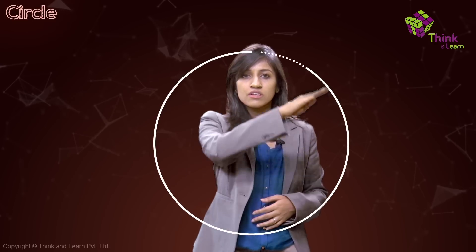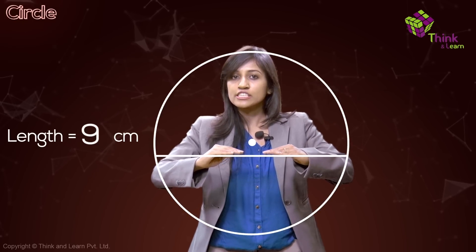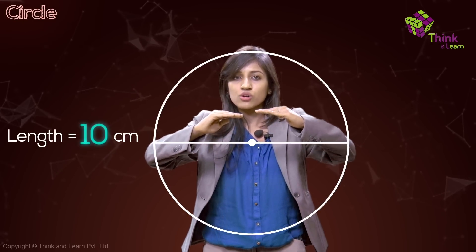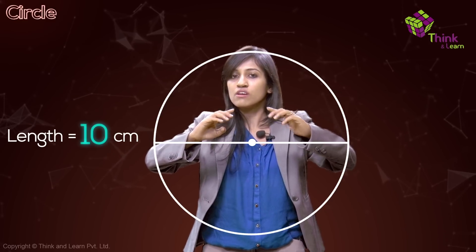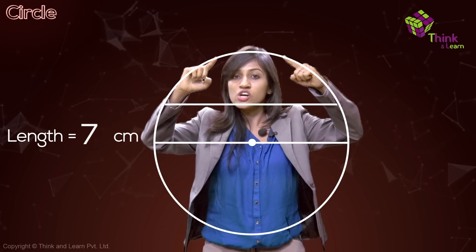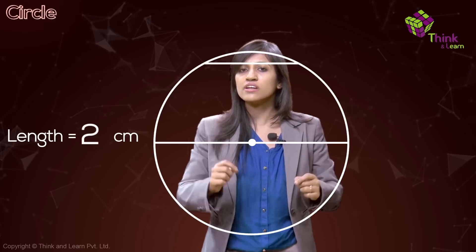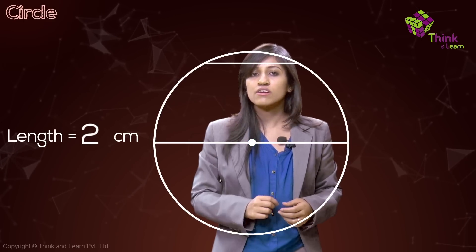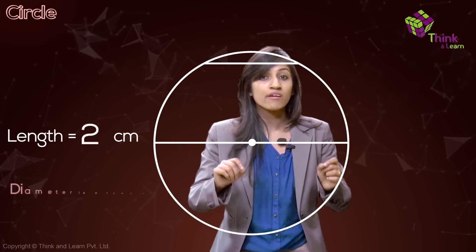Let's prove this together. Take a circle with a chord, and keep pushing the chord up — notice the length gets bigger and bigger until we reach the diameter, which is the longest. Then move past it and the chord gets smaller and smaller. So the diameter is the longest chord, meaning a diameter is a type of chord, but every chord is not a diameter.